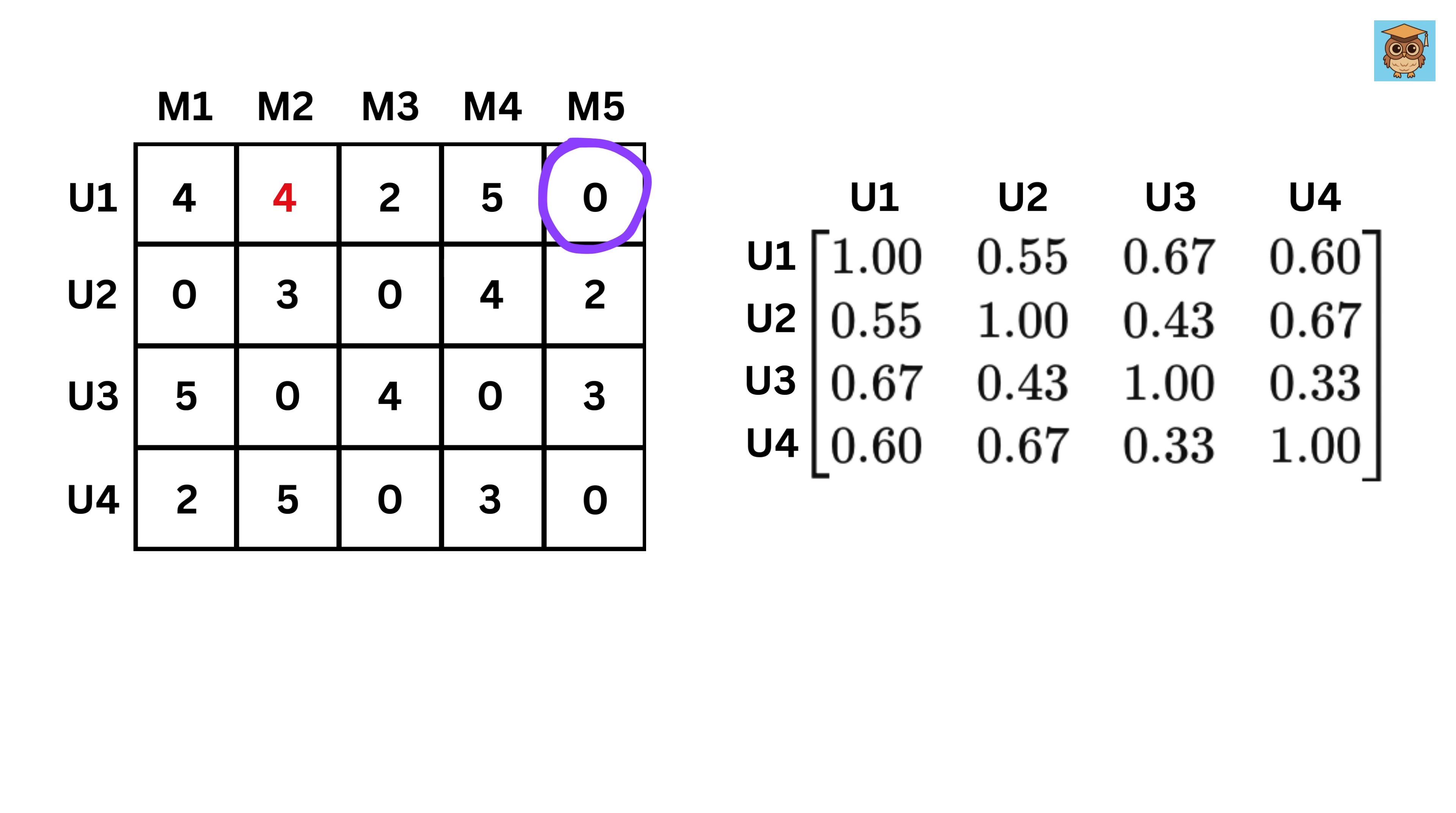What about movie five? User one hasn't seen it either. User two gave it 2, user three gave it 3, user four gave it 0. So we will use user two and user three. Finally, we get this rating as around 2.5.